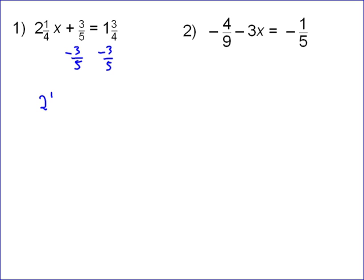So that means we're gonna have 2 and 1 fourth x, which I'm going to go ahead and change to 9 over 4 because I think it's always easier to work with improper fractions, equals 1 and 3 fourths. Well, 1 and 3 fourths is the same as 7 over 4.